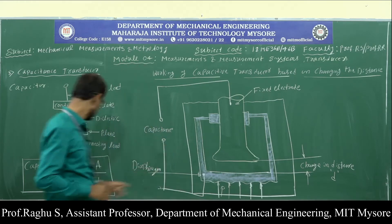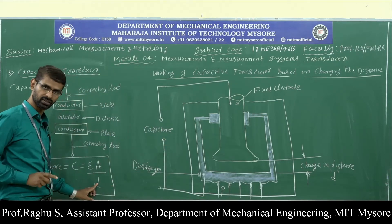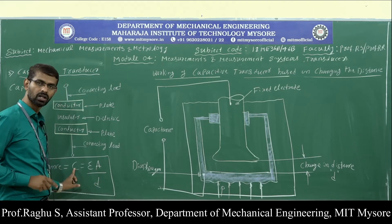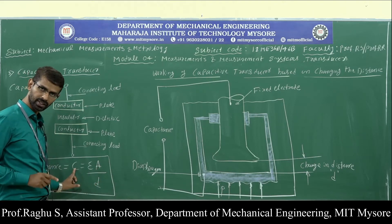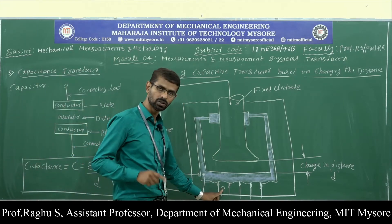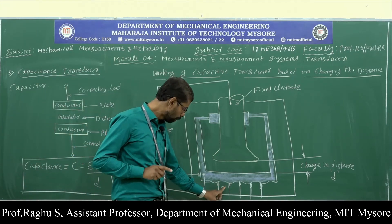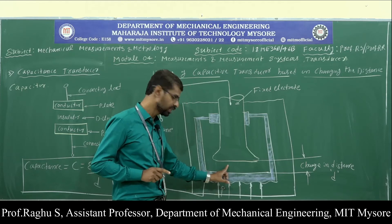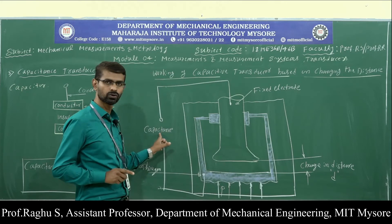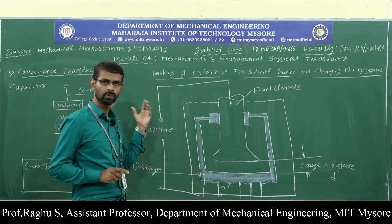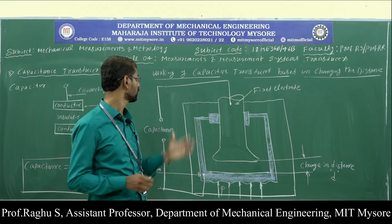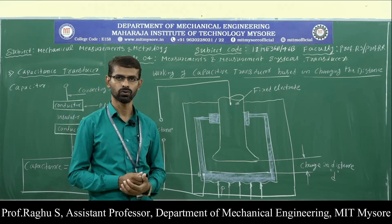As per the formula, when the distance between the two plates changes, capacitance also changes. When pressure is applied onto the diaphragm, the distance changes, and consequently the capacitance changes. This change in capacitance can be measured and taken as the measurement of pressure. This is the working principle of the capacitive transducer.